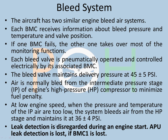The most important point in the pneumatic system is that leak detection is disregarded during an engine start — so when you start the engine there is no leak detection. APU leak detection is lost if BMC one is lost. This is the key difference between BMC one and BMC two: if one BMC fails the other takes over most monitoring functions, except that APU leak detection is lost if BMC one is lost. BMC one has the APU leak detection function, whereas BMC two does not.